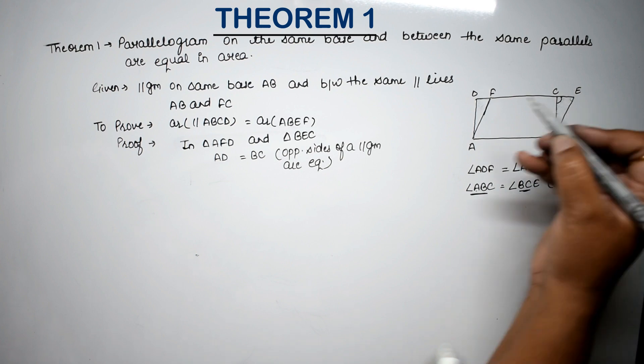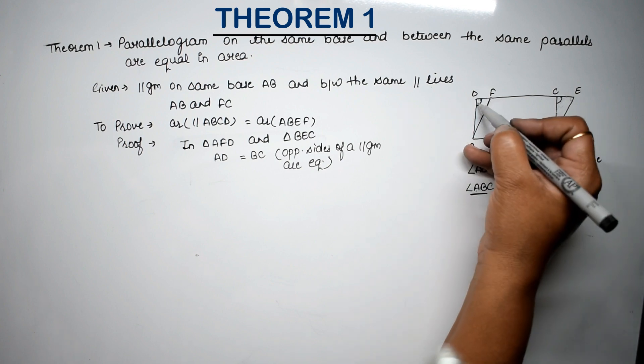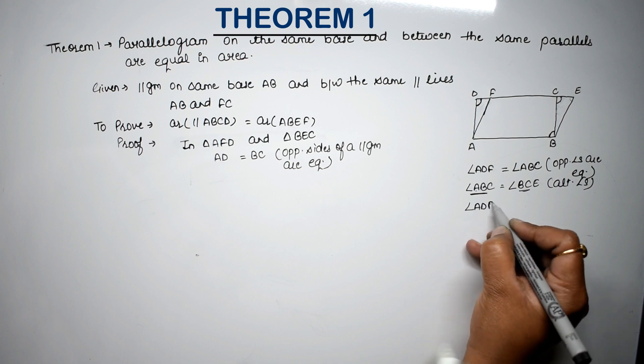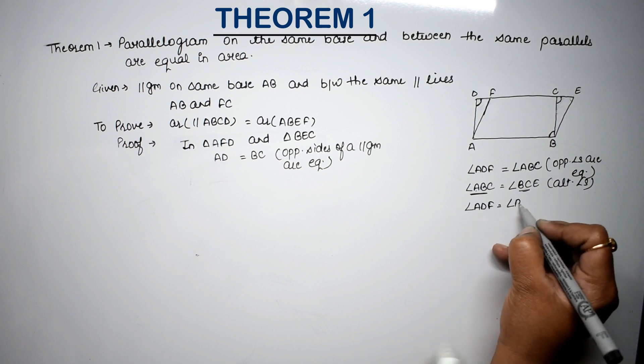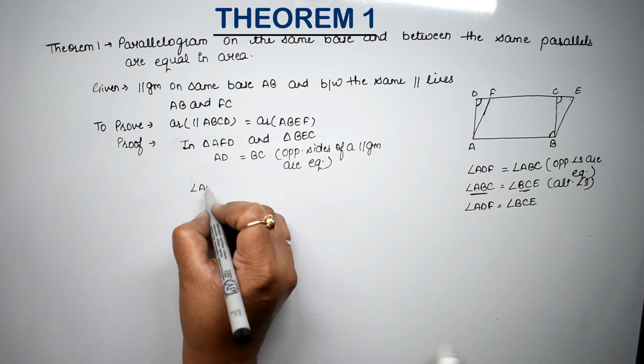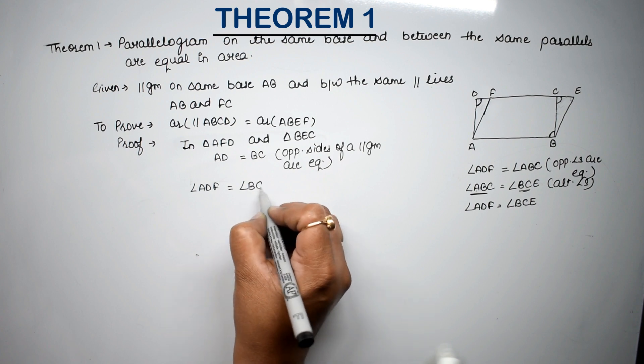Angle ABC is equal to angle BCE. Why? Because we know AB parallel to CD, and BC is the transversal, so these are alternate angles. Alternate angles. Right? So now ABC is equal to BCE. This is equal to this. But this angle was equal to this. So we can say angle ADF is equal to angle BCE. So we can write here, angle ADF is equal to angle BCE. Proved.